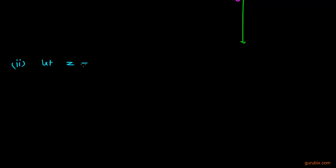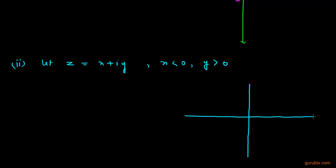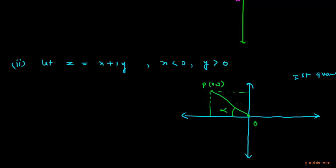Now let us move to the second case. Suppose we are given a complex number z = x + iy, where x is negative and y is positive. This means in the Argand plane we are in the second quadrant. If we represent this complex number by point P with coordinates (x, y), and if we join point P with the origin, and this angle is alpha, then the argument θ is equal to π minus α.